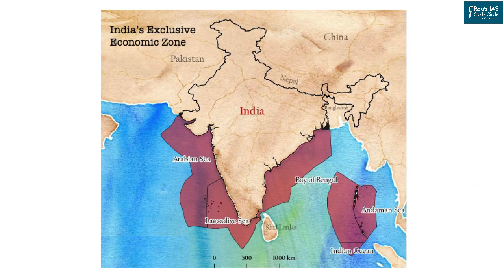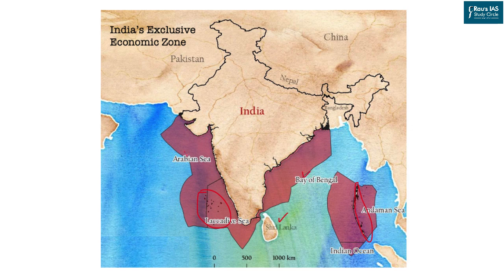Looking at India's Exclusive Economic Zone, the purple shaded portion on screen shows India's EEZ. It has a varied border. Because of the presence of the Lakshadweep Islands and the Andaman and Nicobar Islands, India's EEZ is very large. India shares an international marine border with Sri Lanka, making that EEZ segment very small, while it is very wide in terms of the Bay of Bengal and the Arabian Sea.